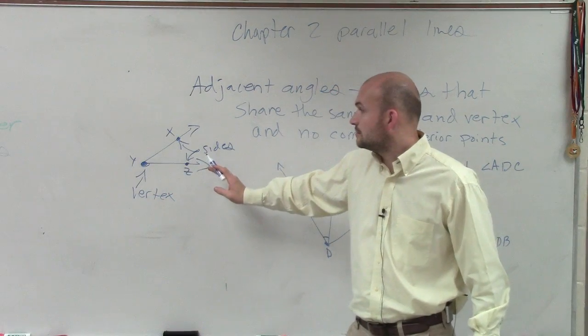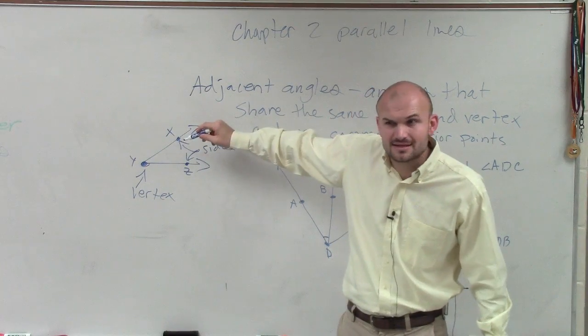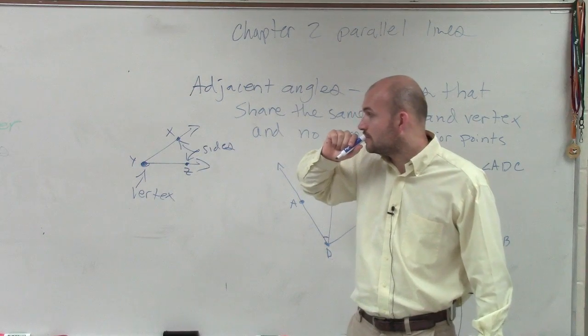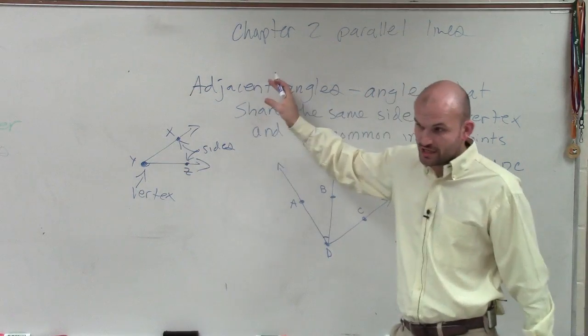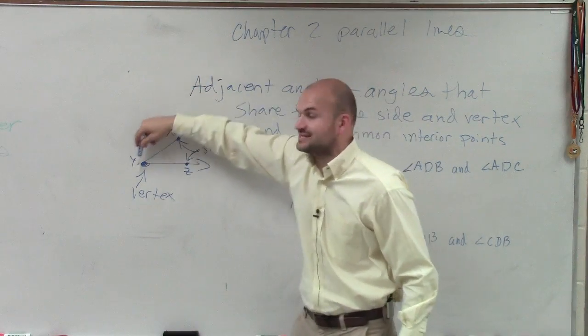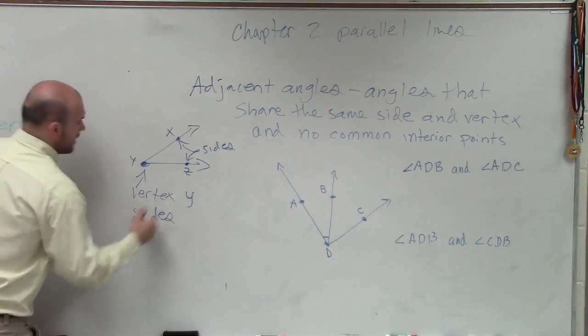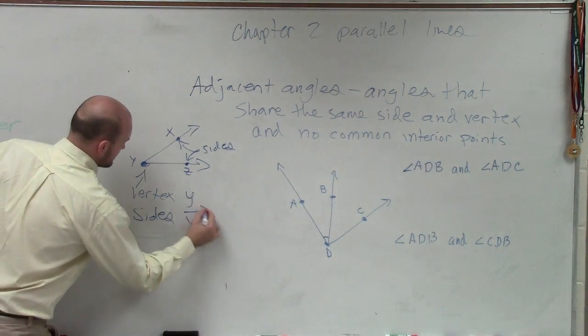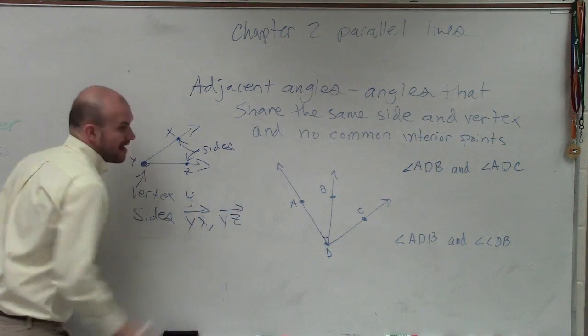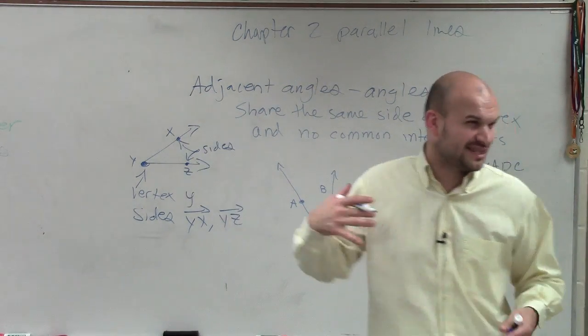X and Z. Yeah, well, those are points on the sides. But how do we label the sides? Y on X, Y, and then Y, Z. Right. You always want to go from the vertex to the other point. So yes, X and Z are on the sides, but that's not the name of the side, because the side is a ray. So we would say the vertex is Y, and the sides are YX, they're a ray, and YZ, which is a ray. All of you guys on your homework, a lot of you messed up on that, so I made sure you guys did that correctly.